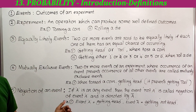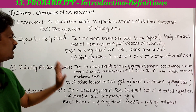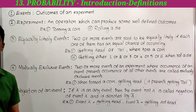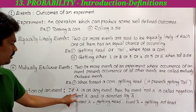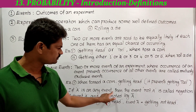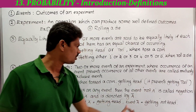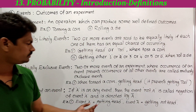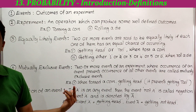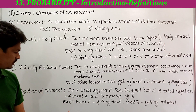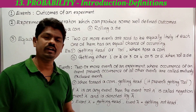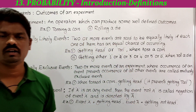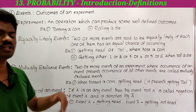Next, negation of an event. If capital A is any event, then the event 'not A' is called the negation of event A and is denoted by A-bar. For example, if event A equals getting head, then its negation, A-bar, equals getting not head.